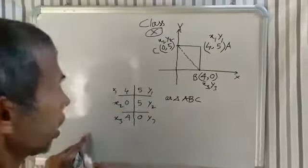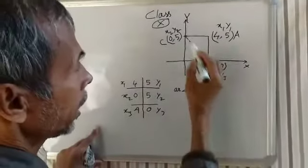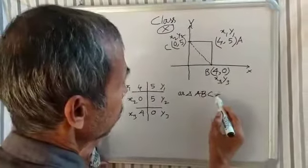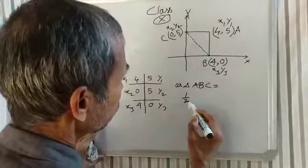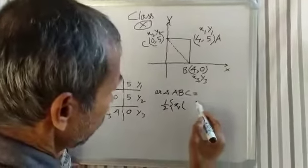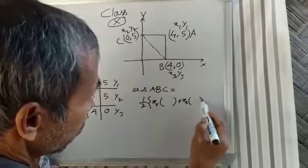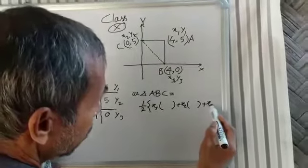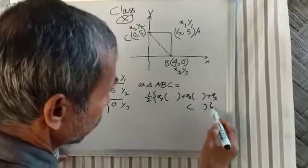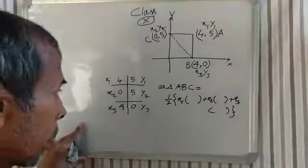The area of triangle ABC equals half times [x1 into (y2 minus y3) plus x2 into (y3 minus y1) plus x3 into (y1 minus y2)].